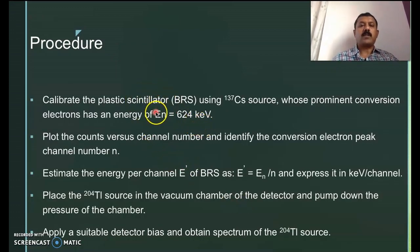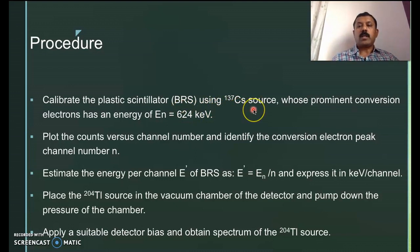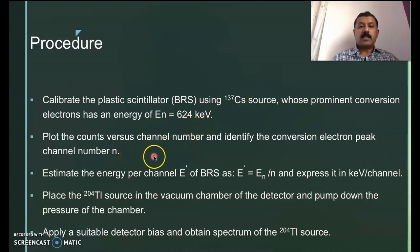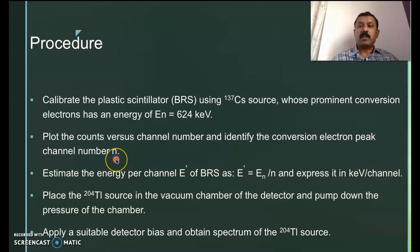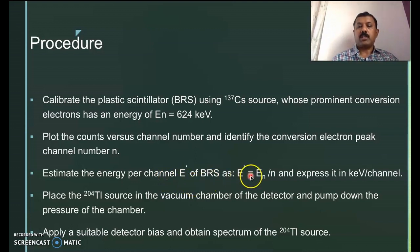This is the procedure to follow. First, you have to calibrate the beta-ray spectrometer using the cesium-137 source and ensure that the prominent conversion electrons have an energy of 624 keV. Then plot counts versus channel number and identify the conversion electron peak channel number N. Then estimate the energy per channel, E′, which equals E_N divided by N, expressed in keV per channel.